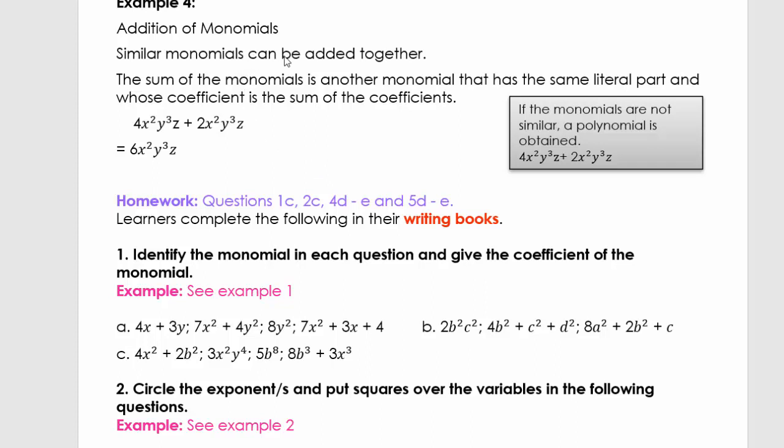Similar monomials can be added. The sum of the monomials is another monomial that has the same literal part and whose coefficient is the sum of the coefficients. Here we have 4x squared y to the power of 3z plus 2x squared y to the power of 3z. If we add it, we add the coefficients and the literal parts are the same, so it's 6x squared y to the power of 3z.